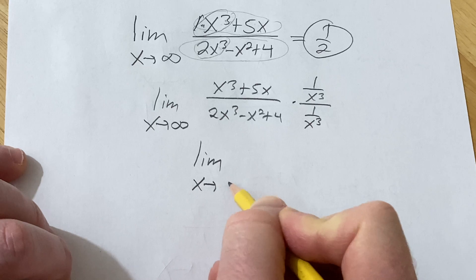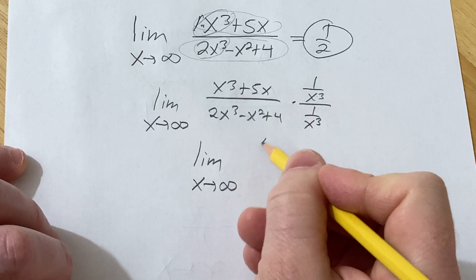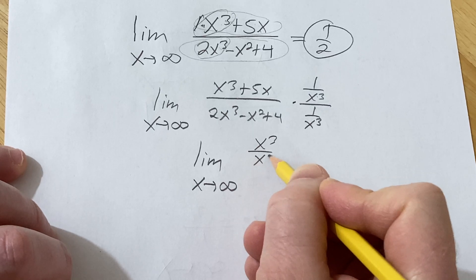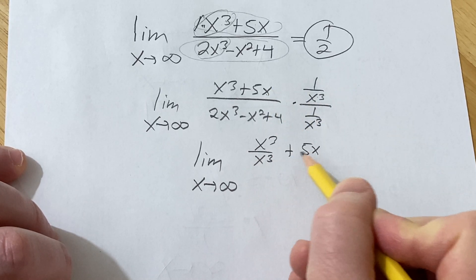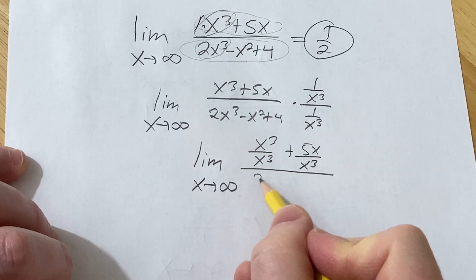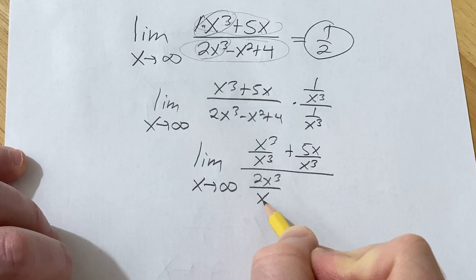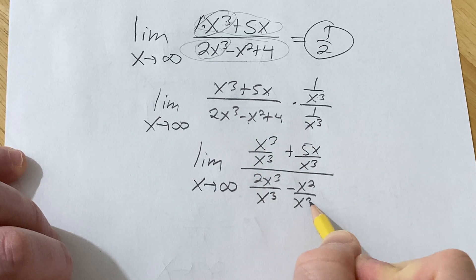It's the limit as x approaches infinity. So 1 over x cubed times this. I'll show all the work. And then 1 over x cubed times this. And then 1 over x cubed times this. So 2x cubed over x cubed minus x squared over x cubed plus 4 over x cubed.